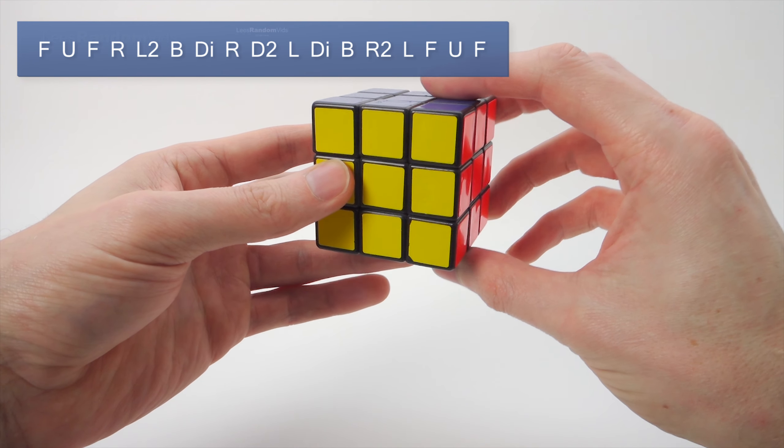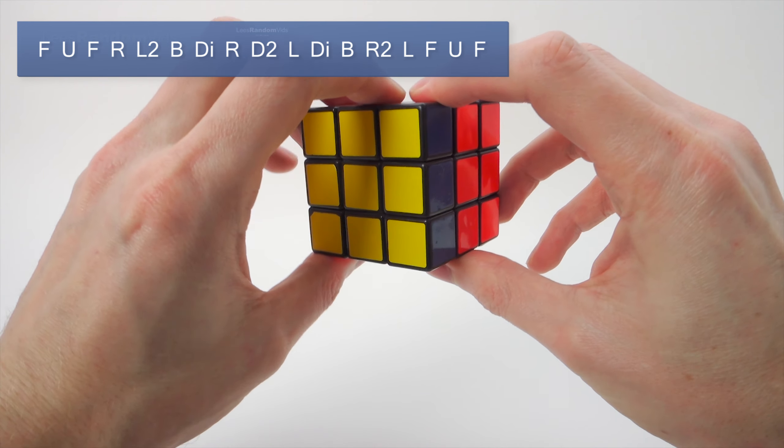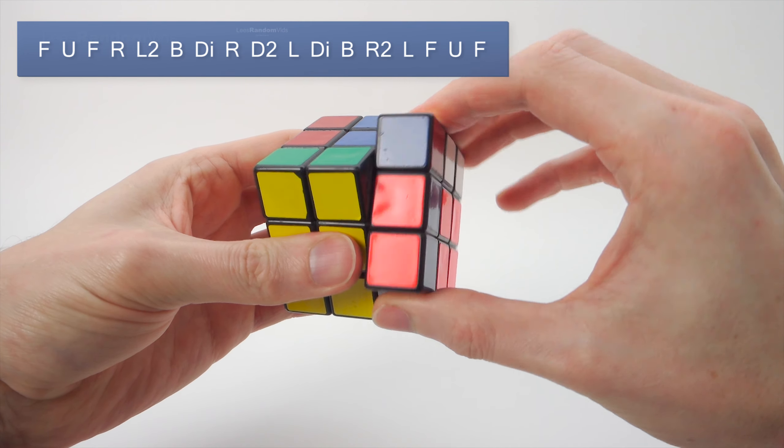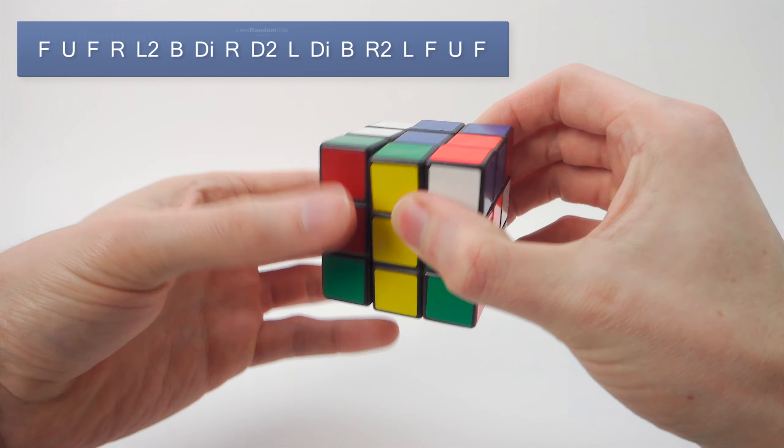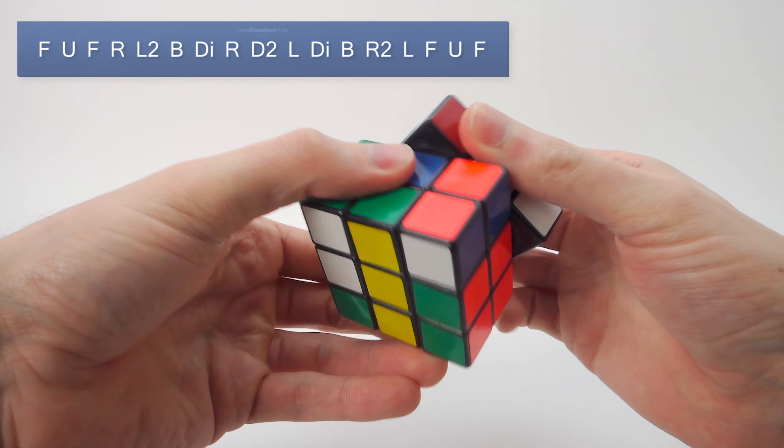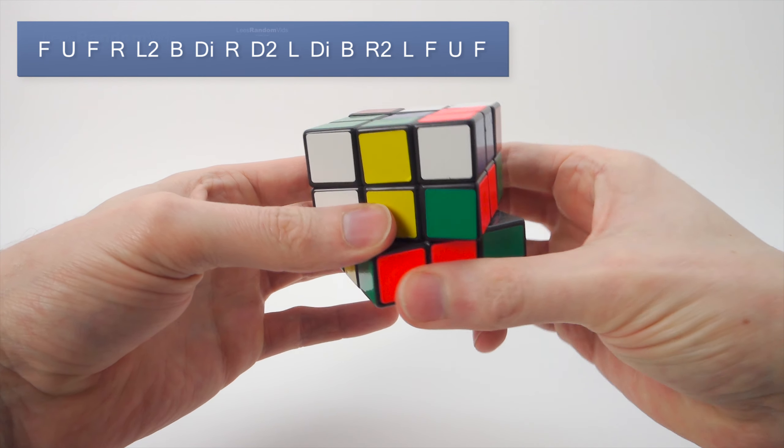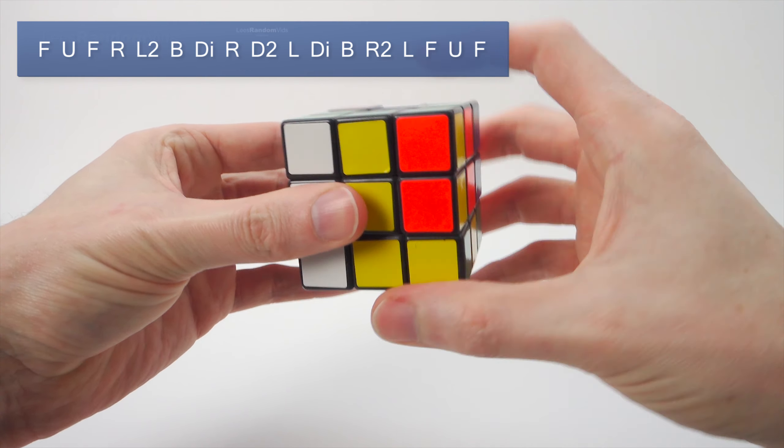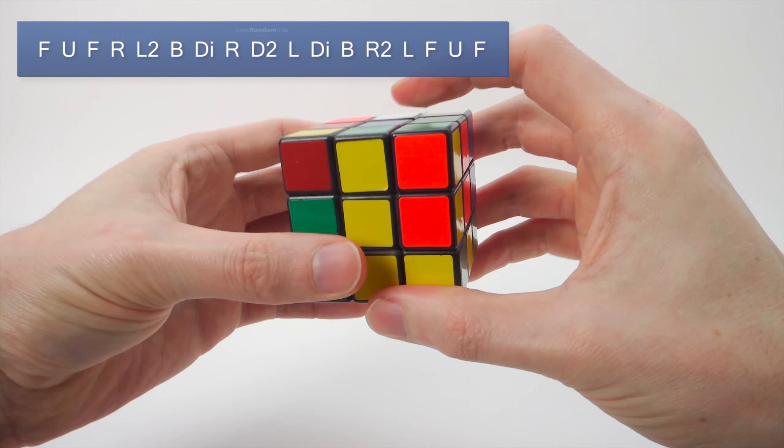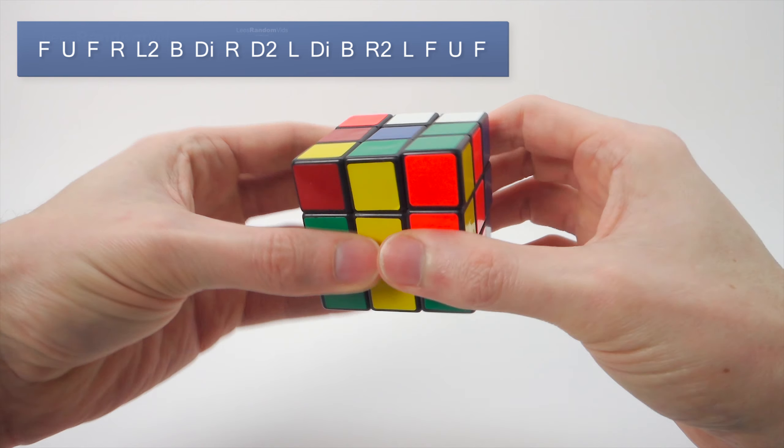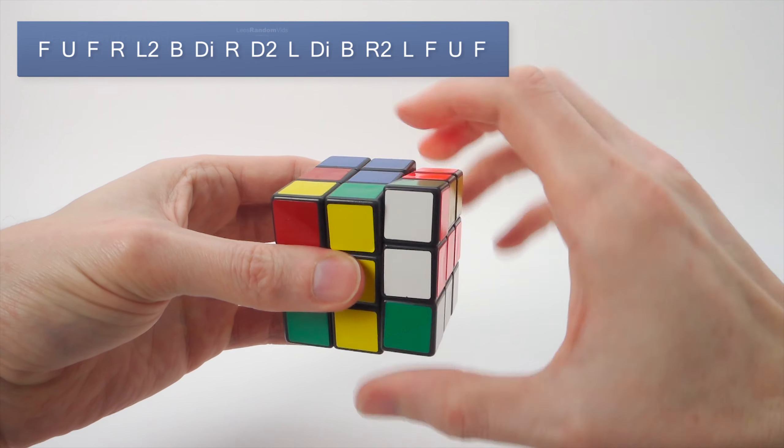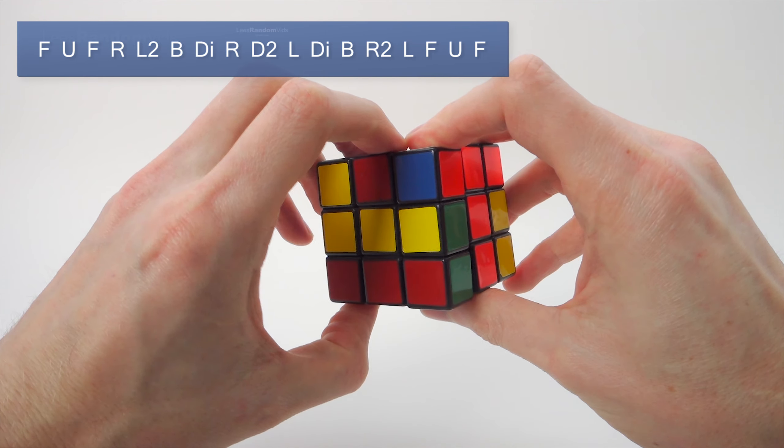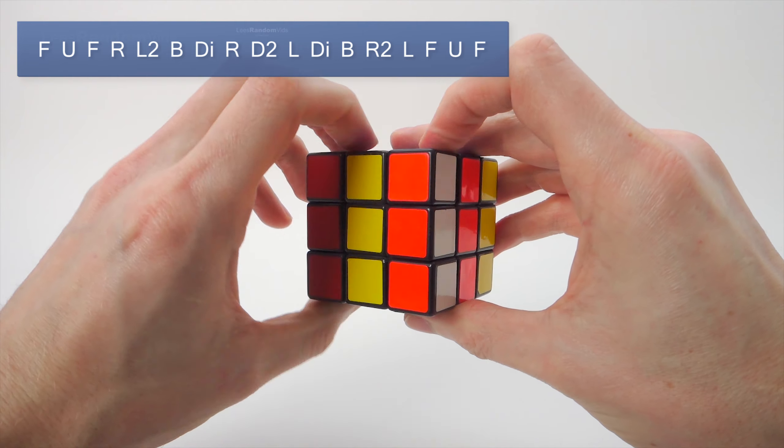And then just do the algorithm. So here we need to go, so we go F, U, F, R, L2, B, D I, R, D2, L, D I, B, R2, L, F, U, F.